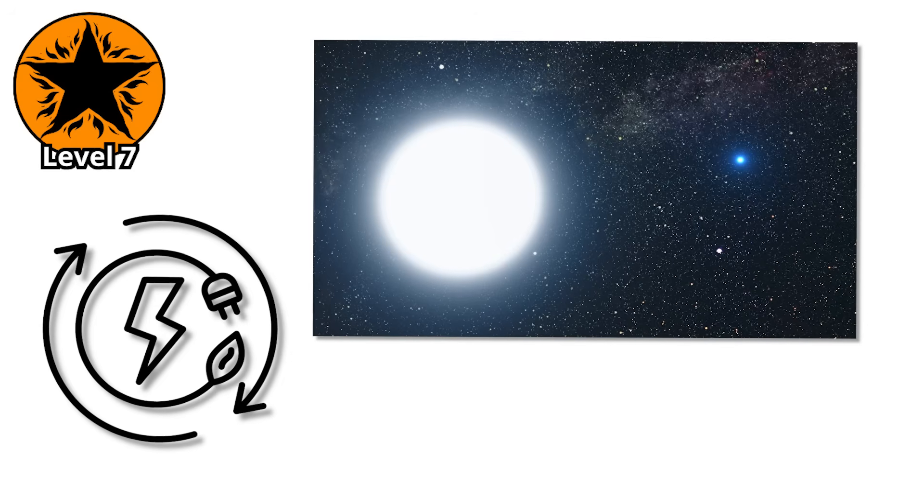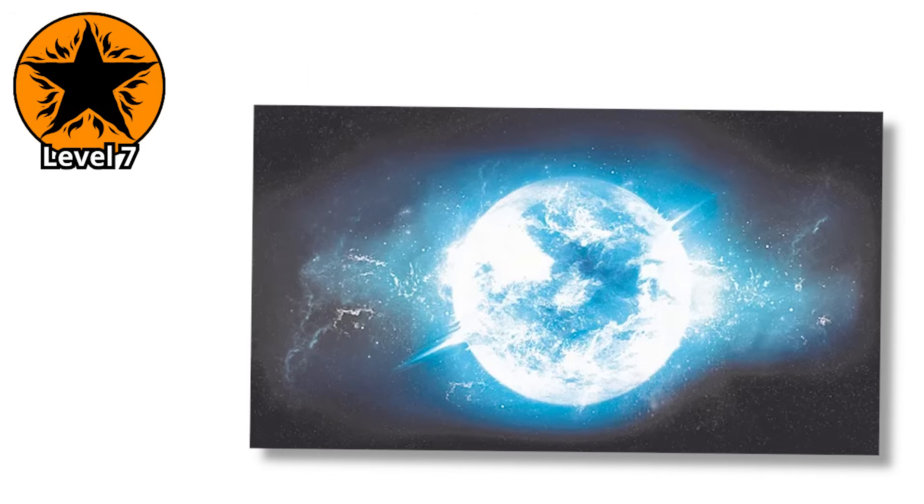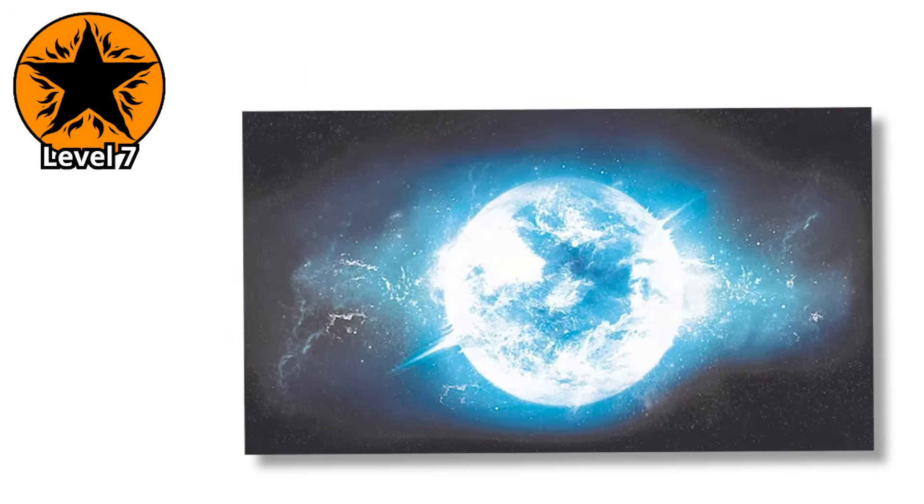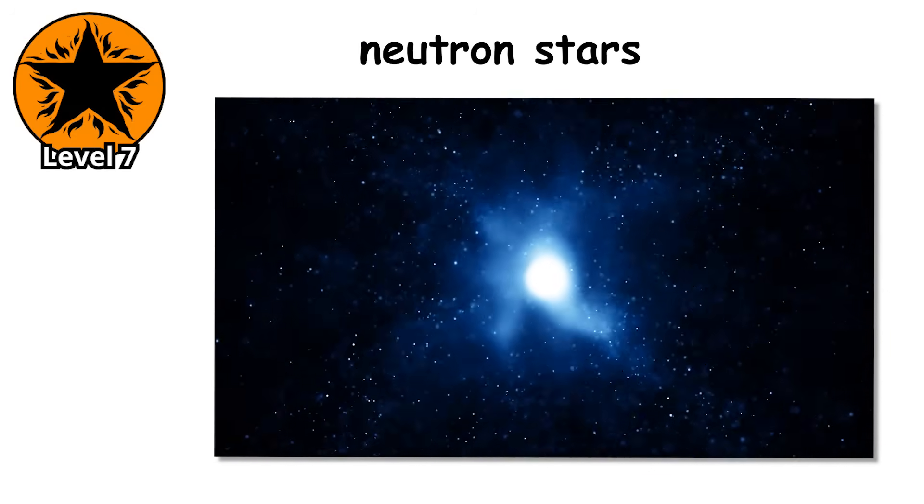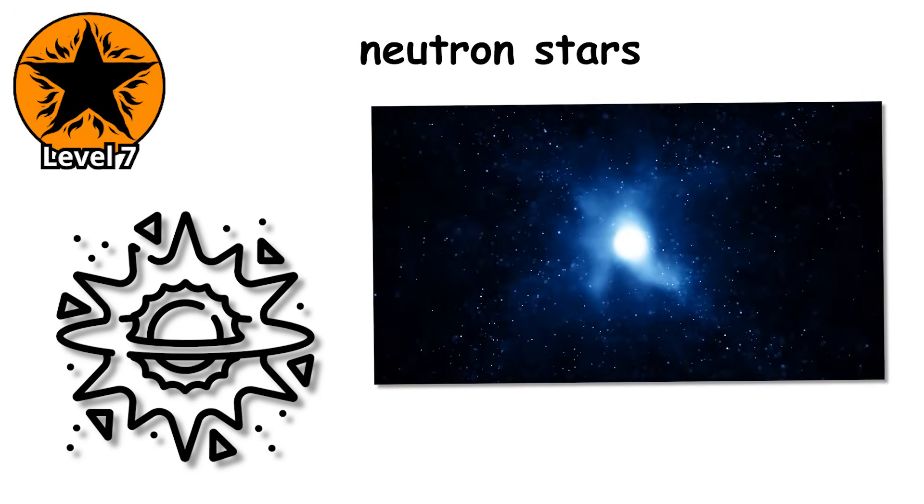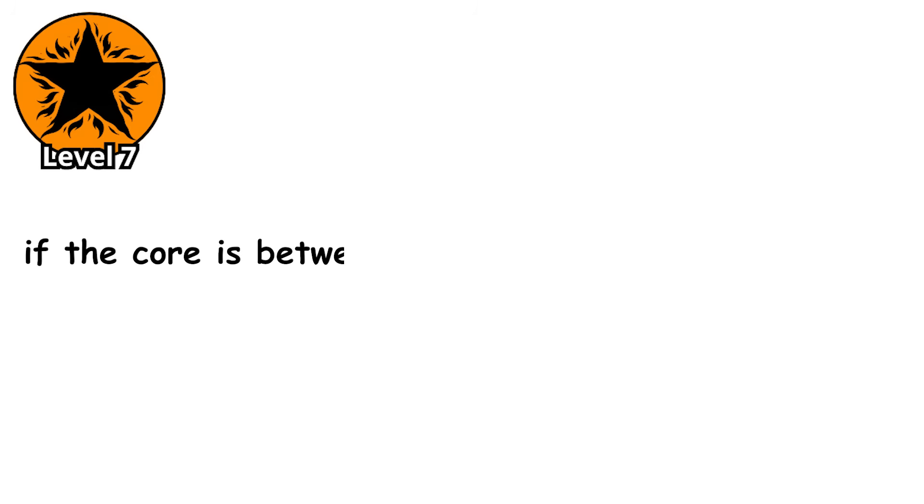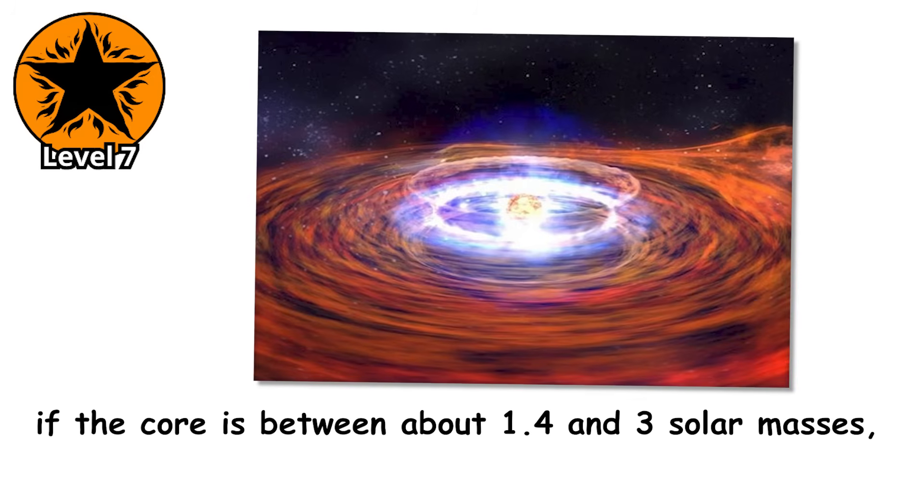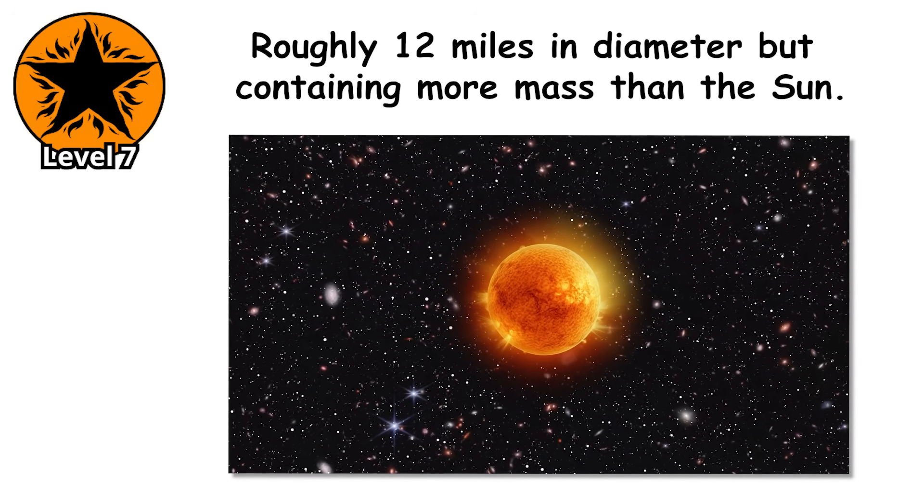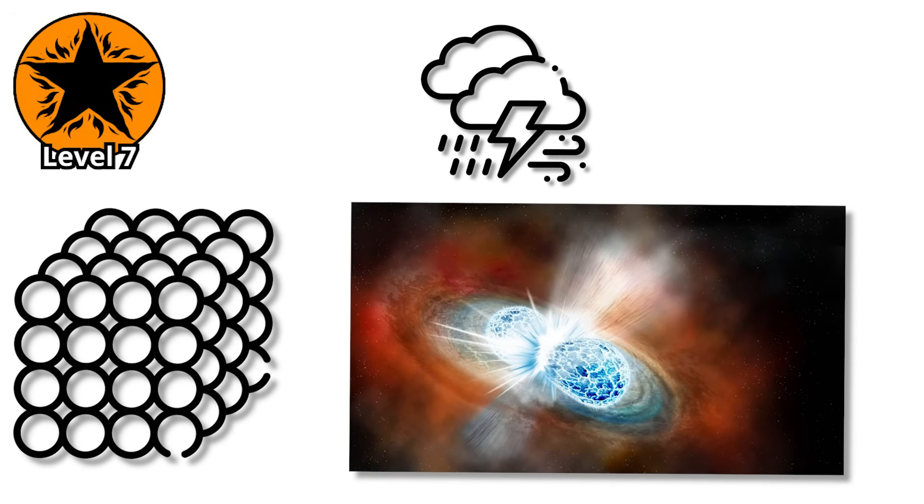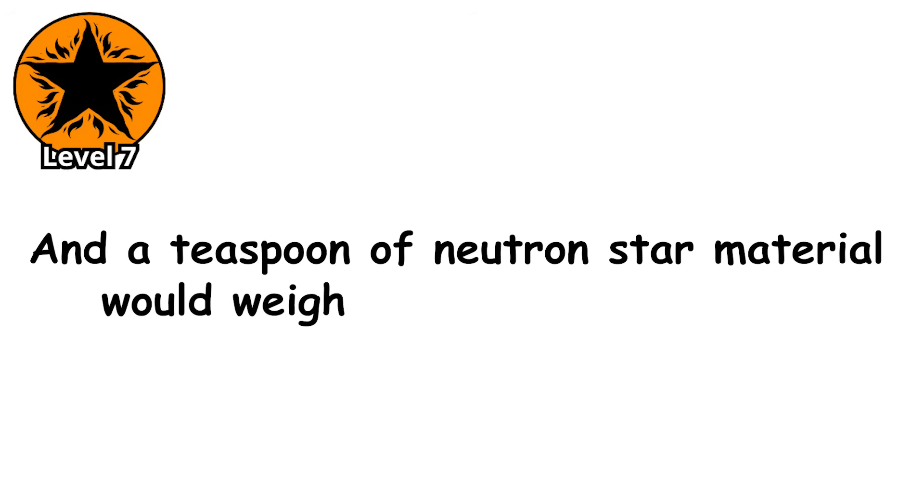White dwarfs don't produce energy through fusion anymore. They just sit there, slowly cooling off over trillions of years, radiating away their residual heat. But white dwarfs are nothing compared to neutron stars. When a massive star goes supernova, if the core is between about 1.4 and 3 solar masses, it collapses into a neutron star, an object roughly 12 miles in diameter but containing more mass than the sun. The density is so extreme that protons and electrons are crushed together into neutrons, and a teaspoon of neutron star material would weigh about 10 million tons.